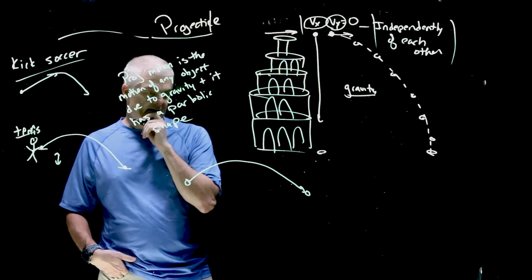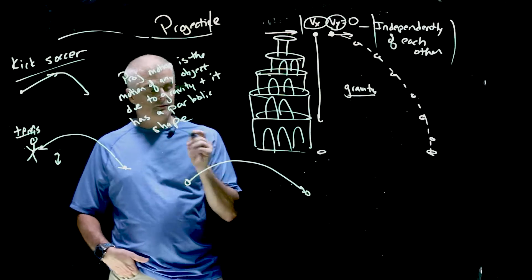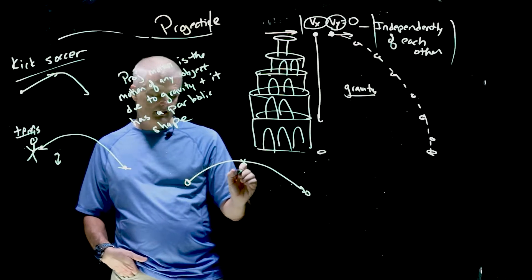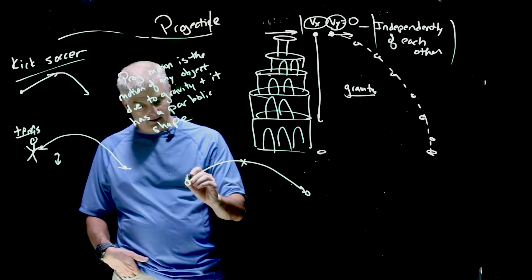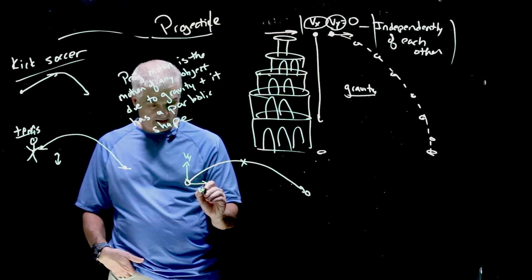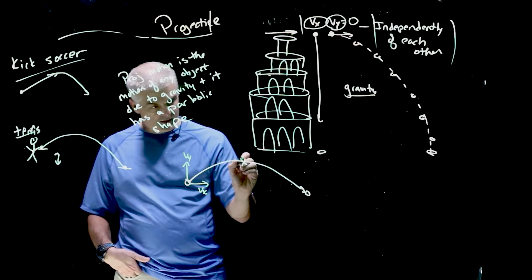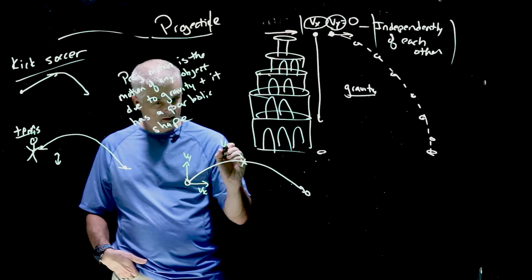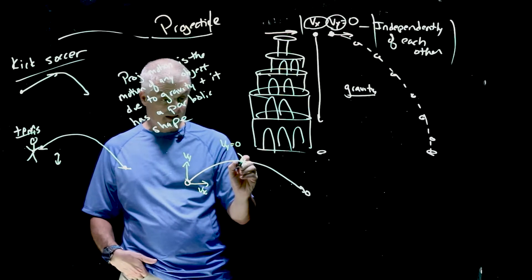So the question asked is, at what point is the vertical velocity - the VY - equal to zero? Well, that's going to be at the top of the arc. So when it reaches a certain point, it's got both a VY and a VX - we can have an angle - but the VY, as it rises, right here is where the VY equals zero, at the top, the apex. It's got no velocity.